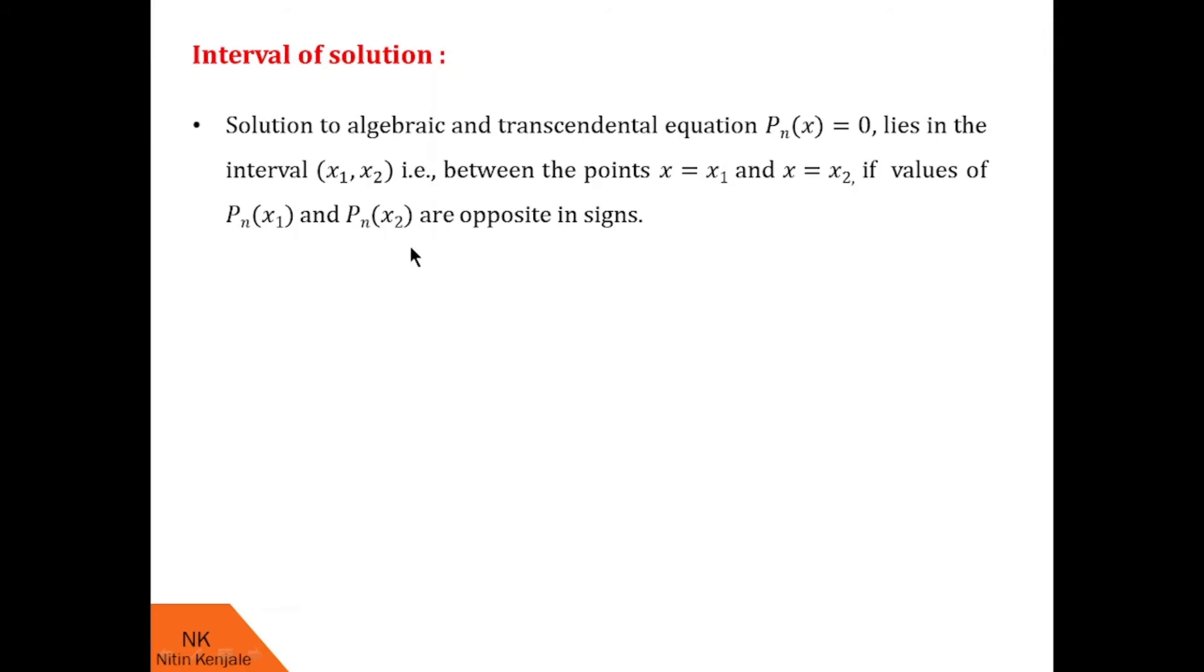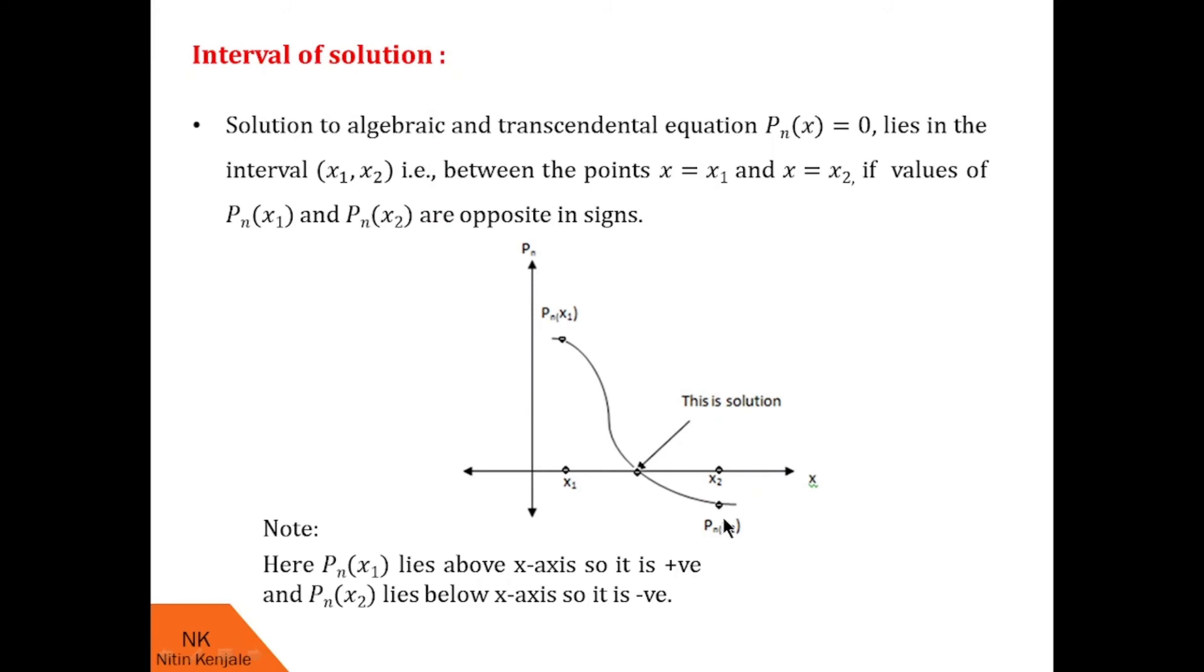Let me explain this with a diagram. Consider this curve Pn(x). This curve crosses the x-axis at this point, so this point is the solution to equation Pn(x) = 0. x1 is here and this is x2. This is Pn(x1) and this is Pn(x2). Since Pn(x1) is above the x-axis, it is positive. Since Pn(x2) is below the x-axis, it is negative. So Pn(x1) and Pn(x2) are opposite in sign, therefore the solution lies between x1 and x2.